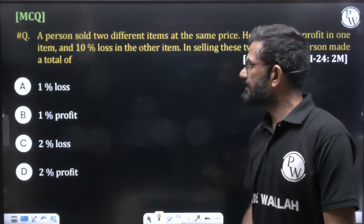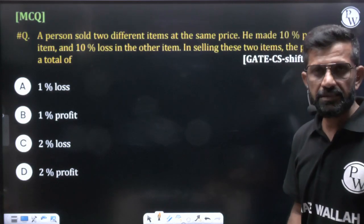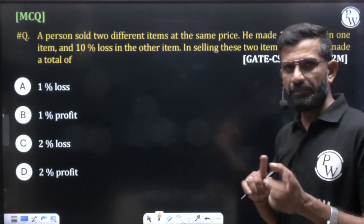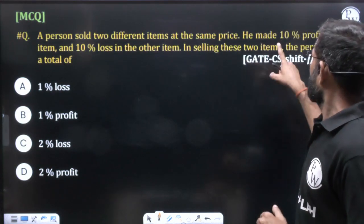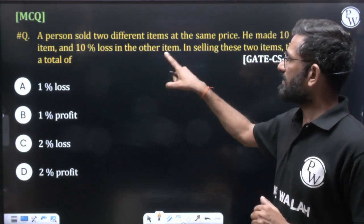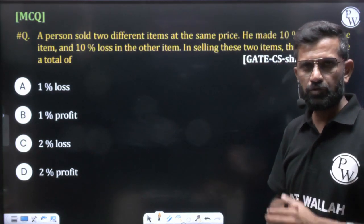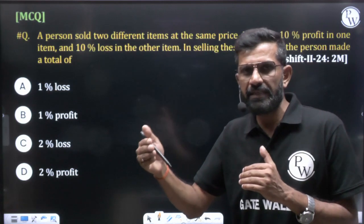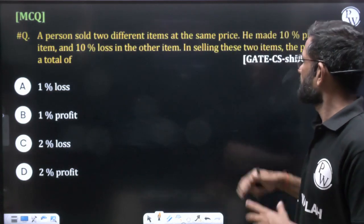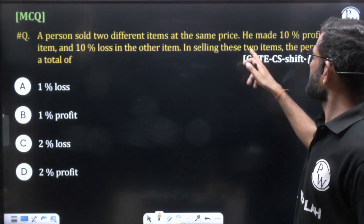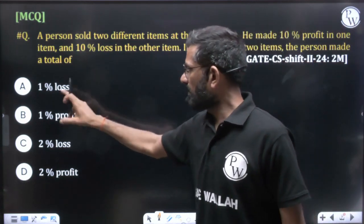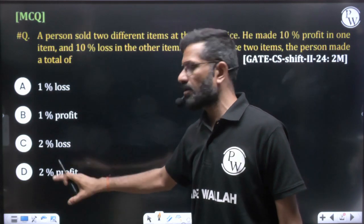The question states a person sold two different items at the same selling price. He made 10 percent profit on one item and 10 percent loss on another item. When selling these two items, the person made a total of — is it one percent loss, one percent profit, two percent loss, or two percent profit?